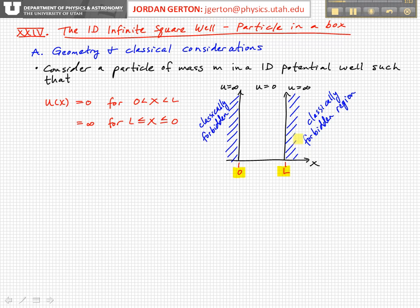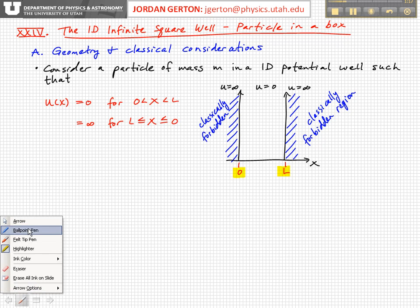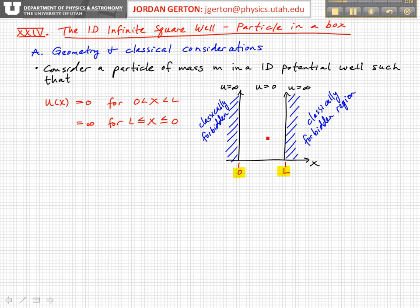So we have a particle of mass m sitting in the well, bouncing back and forth like this. If it gets to the right wall at L, it bounces elastically off. If it gets to the left wall, it bounces elastically off.